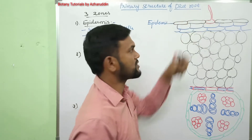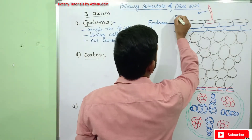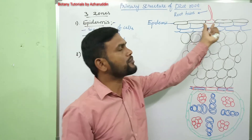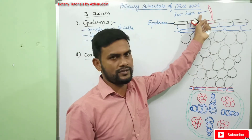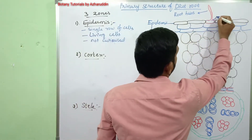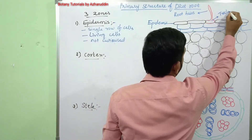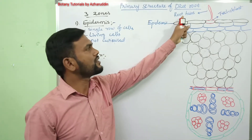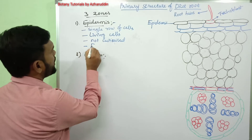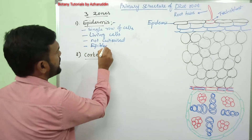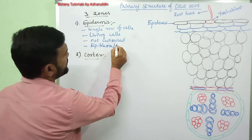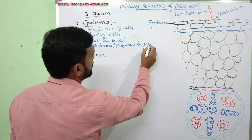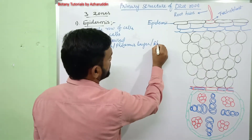Some of the epidermis cells produce tubular structures called root hairs. They are the outgrowth of some epidermis cells. The cells which produce root hairs are called trichoblasts. Due to the presence of root hairs, the epidermal tissue is also called epiblema.